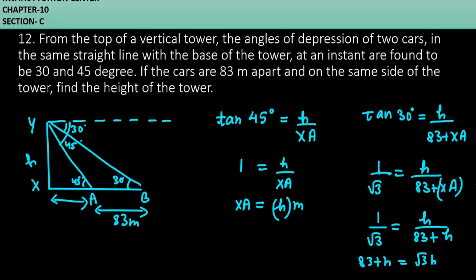So it will be take h to the right side. It will give you 83 is equal to root 3 h minus h. And you can take h common from the right side. And you will get root 3 minus 1. And root 3 minus 1 is the value of h in denominator.